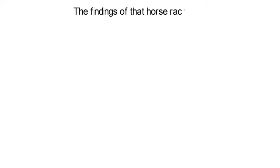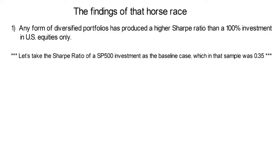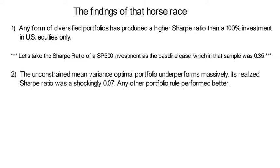The findings of that horse race are as follows. First, any form of diversified portfolio has produced a higher Sharpe Ratio than a 100% investment in US equities only. Taking the Sharpe Ratio of the S&P 500 as the baseline, its realized Sharpe Ratio in the sample was 0.35. The second finding was that the unconstrained mean variance optimal portfolio underperforms massively — its realized Sharpe Ratio was a shockingly low 0.07.